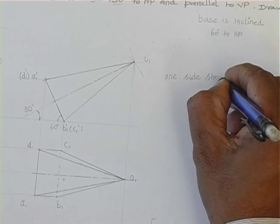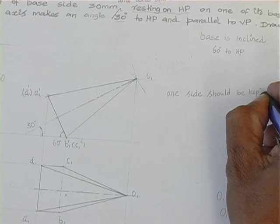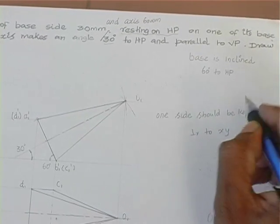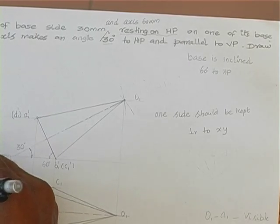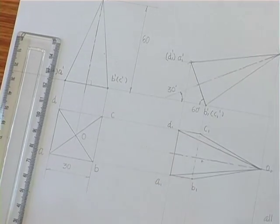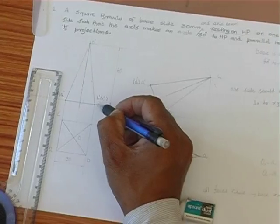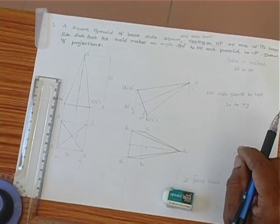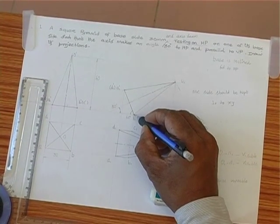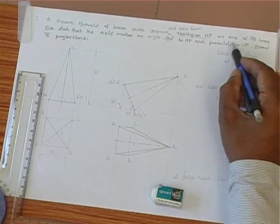The thumb rule is one side should be kept perpendicular to XY. Let us say here we have AD, DC perpendicular to XY. We need to have at least one side perpendicular to XY, so therefore you have two points together. In the next stage also you can find only two points on XY line. Problem says resting on HP with one of its base side, so therefore in the final stage also only two points should be on XY line.